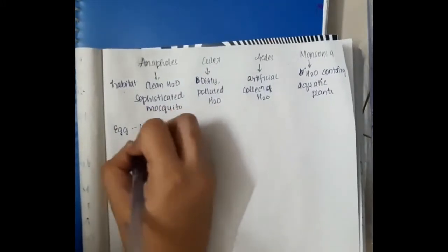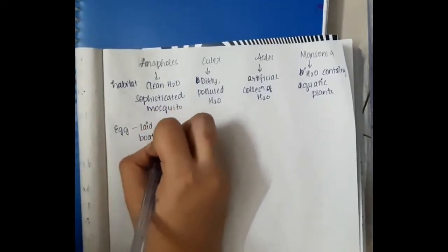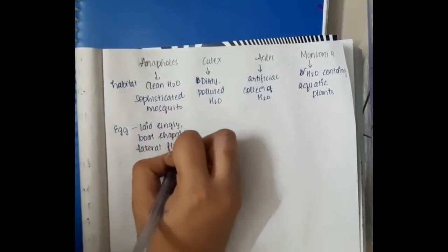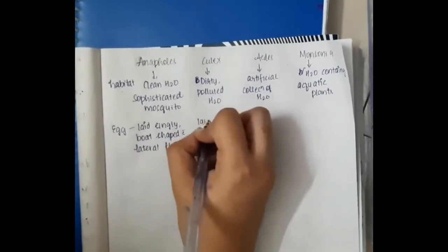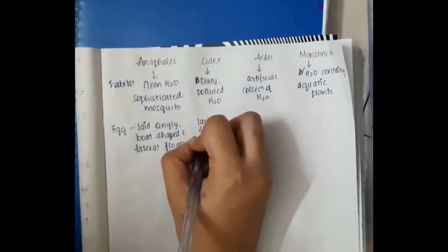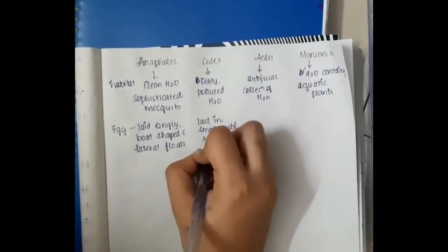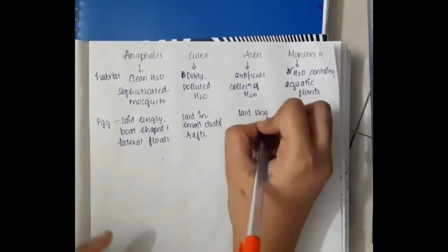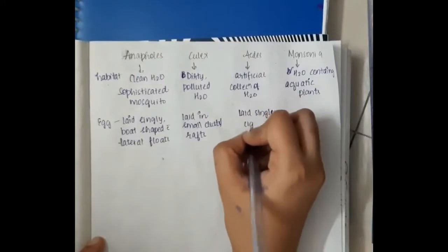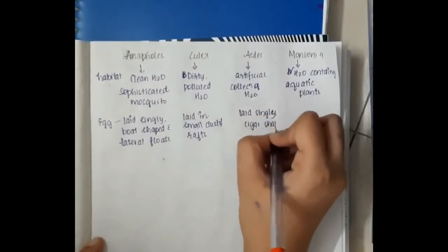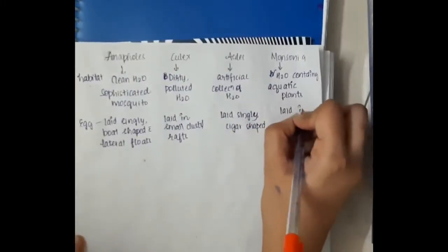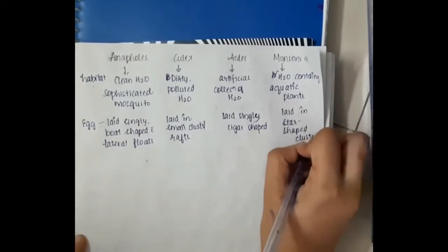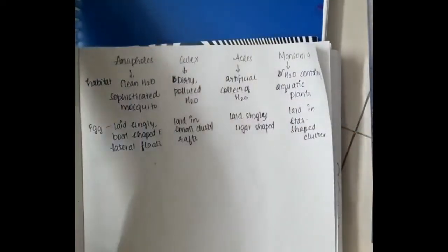Anopheles mosquito eggs are laid singly, boat-shaped along with lateral floats. Culex mosquito eggs are laid in small clusters or rafts. The Aedes mosquito eggs are laid singly and are cigar-shaped. Mansonia eggs are laid in star-shaped clusters.